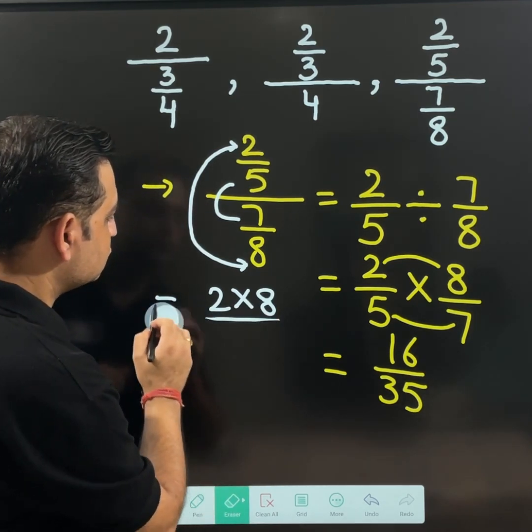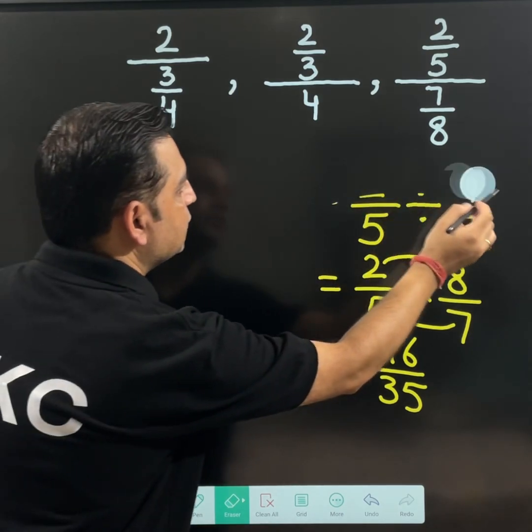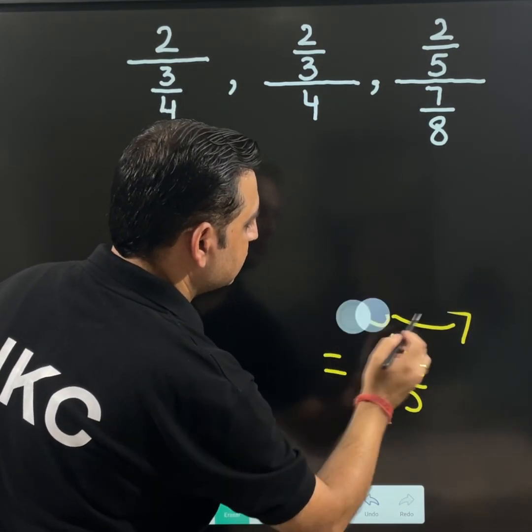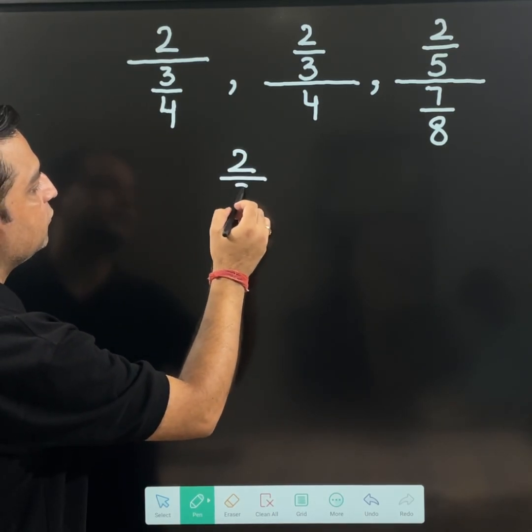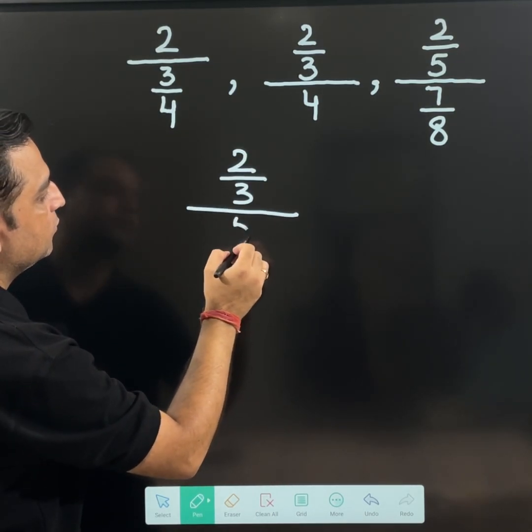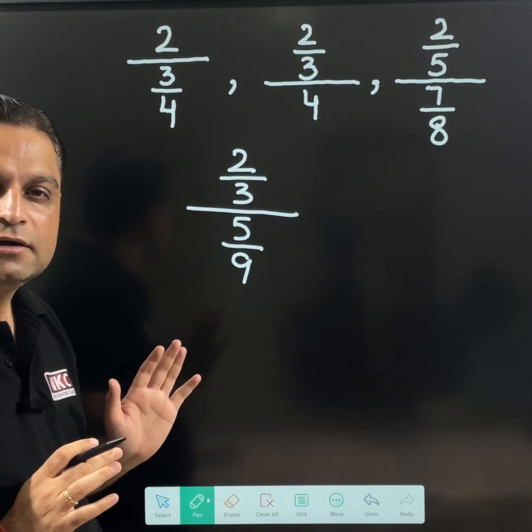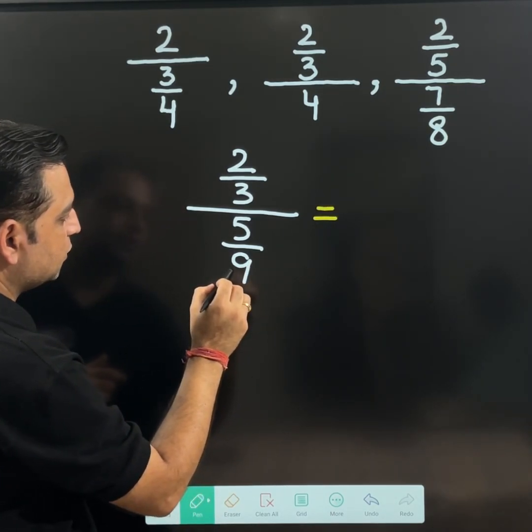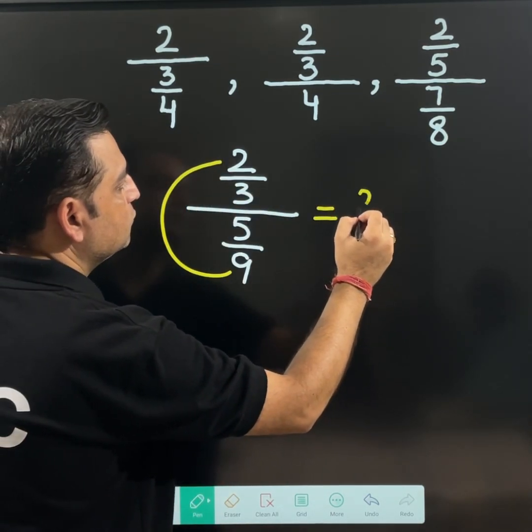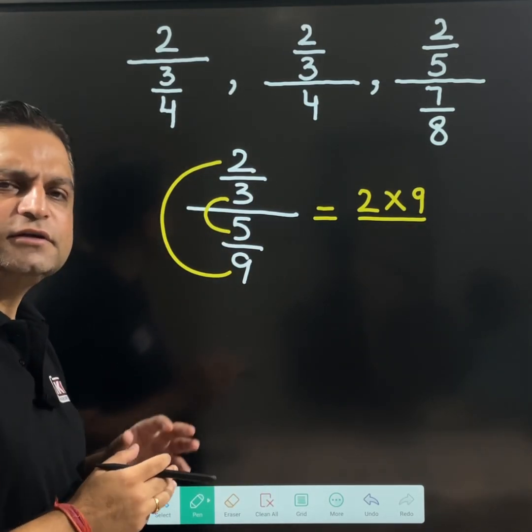Now let us come to another example. If you are clear with this concept, doing next example will be easy. Try this one. If 2 over 3 is divided by 5 over 9. Let us suppose this is the case. Now we will use shortcut which we have just learned. This bottom value 9 will be multiplied with 2. 2 multiply 9. Middle 2 will be multiplied with each other. That means 3 is multiplied with 5.